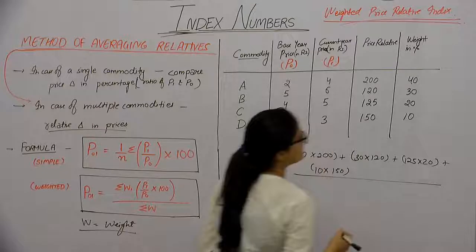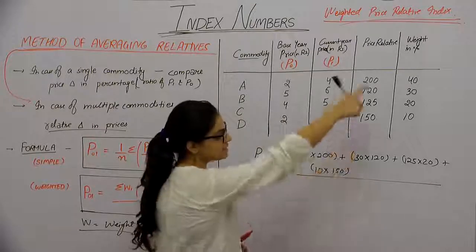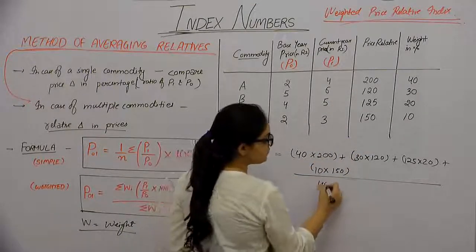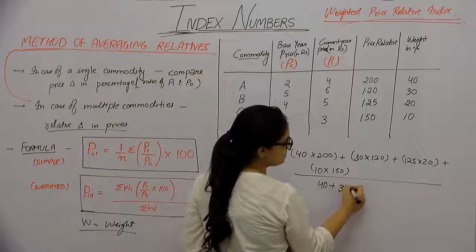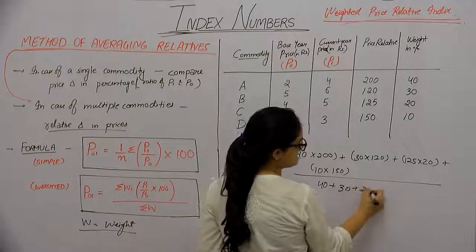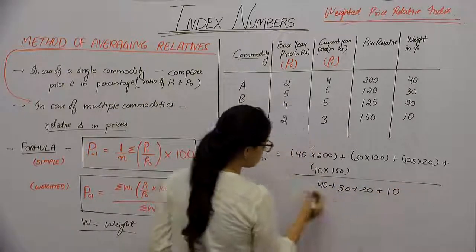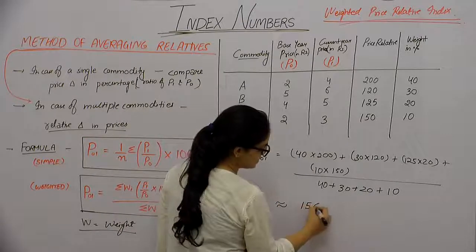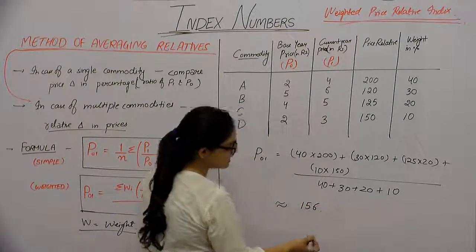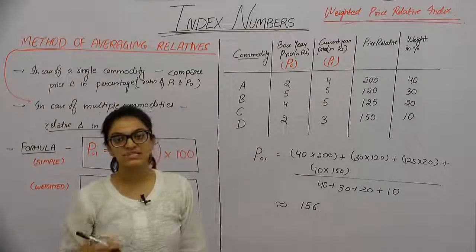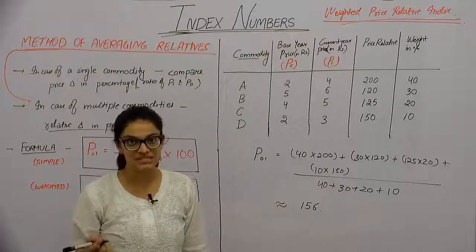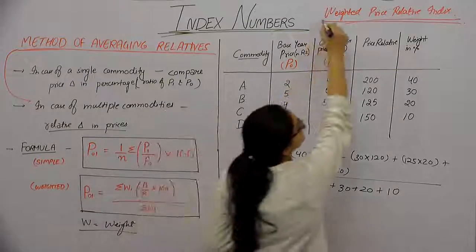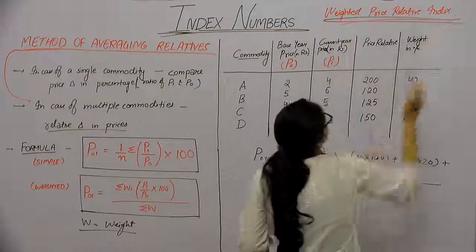Now we divide this sum by the total submission of all weights. So we divide by 40 plus 30 plus 20 plus 10. That will be somewhere around 156. This means a total 56 percent change has come in prices over time, if we go by the method of weighted price relative index.